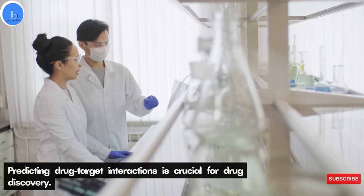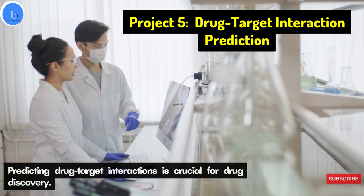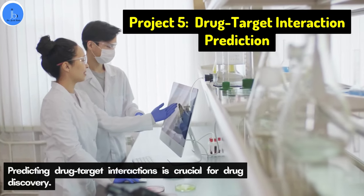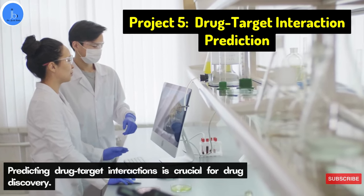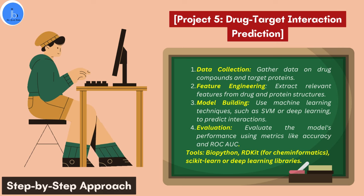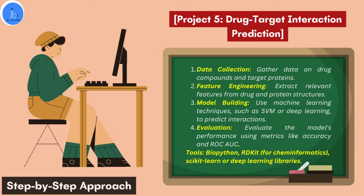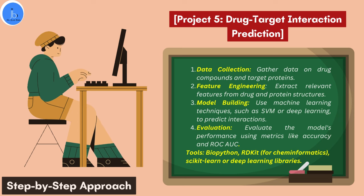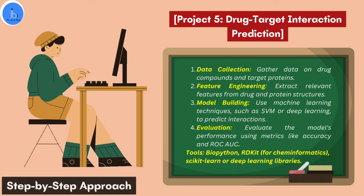Project five is drug-target interaction prediction. This project predicts drug-target interactions, which is crucial for drug discovery and the pharmaceutical sector. Required tools include BioPython, RDKit, Scikit-Learn, and deep learning libraries. Steps include: data collection — gather data on drug compounds and target proteins. Then feature extraction — extract relevant features from drug and protein structures in terms of physicochemical properties and structural functionality. Finally, model building — use machine learning techniques such as SVM or deep learning to predict interactions, and evaluate model performance using metrics like accuracy.